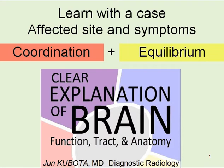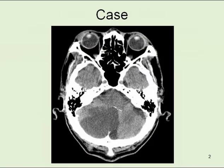In this case, we deal with disorder of coordination and equilibrium. This is a CT image of a patient with brain infarction. There is a low attenuation area at the right cerebral hemisphere and vermis.